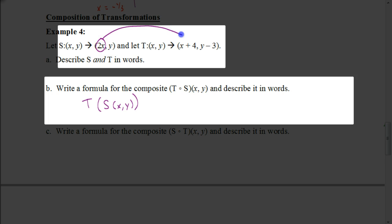So we're going to take this 2x and put it in here for x. We'll replace the x with 2x. And we're going to replace the y in this other equation with just y. So that's going to stay the same. So our composition here of these two transformations would end up being (2x + 4, y - 3).